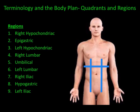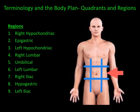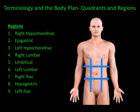The body can also be divided into nine regions, kind of like a tic-tac-toe board. The first region is the right hypochondriac region — hypo means below, and chondra refers to cartilage or the ribs. The next is the epigastric region — epi means above, gastric refers to the stomach. Then the left hypochondriac region, the right lumbar region (lumbar referring to the lower back), the umbilical region or belly button area, the left lumbar region, the right iliac region (iliac referring to the hip bone), the hypogastric region (below the stomach), and finally the left iliac region.